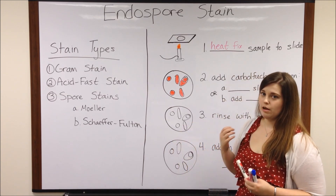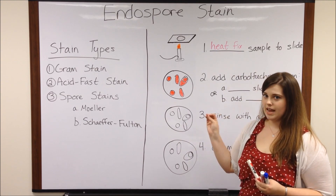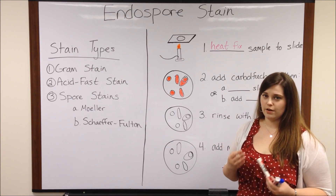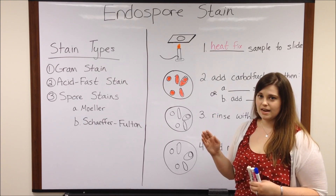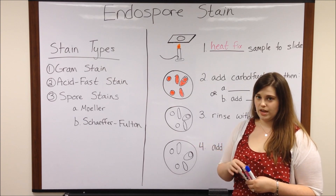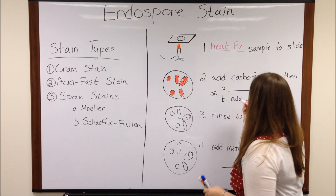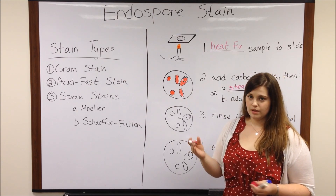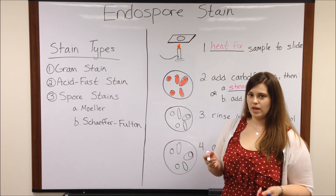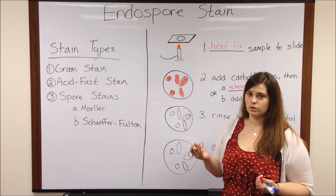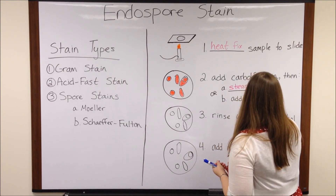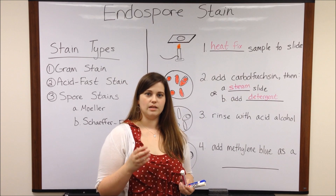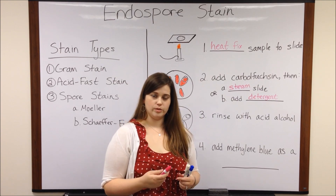The next step is very important for getting the stain to actually stick with the endospores. Remember that the spore coat is very tough and very impervious to chemicals, so in order to make that stain actually stick to the endospore, you have to do one of two things. You can either steam the slide — leaving the slide over a source of steam, like a hot water bath, for three to five minutes. If you don't want to do that, you can also use some kind of surfactant or detergent. This will disrupt the spore coat enough to allow the stain to adhere, although it certainly won't kill the endospore.